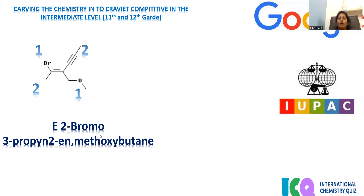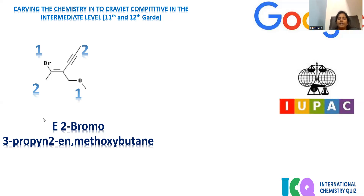After mentioning E, how do we name this compound? The longest chain is taken as highest priority. Counting the longest chain: one, two, three, four, five, six — a six-carbon chain. On the second carbon, bromo is present. On the third carbon, propyne is there — a three-carbon length alkyne. The second carbon is having the double bond.